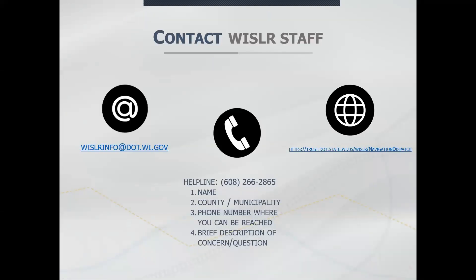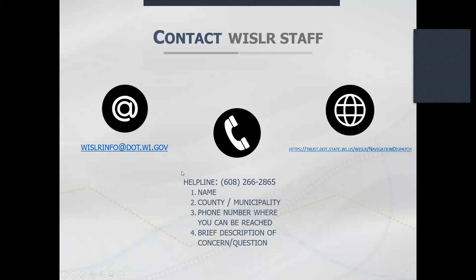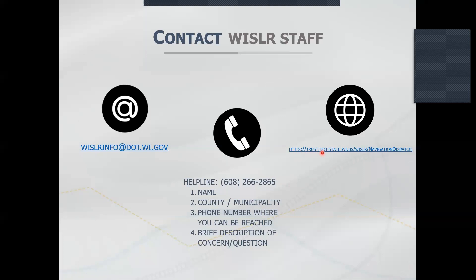That concludes the slideshow presentation of Rating Your Roads. Here is our contact information. You can reach us at whistlerinfo@dot.wi.gov for any questions to Wisconsin DOT. Our phone number is 608-266-2865 — you'll be asked to leave your name, county, municipality, and a brief description of your question, and the right person will get back to you. You can also contact us through the Whistler website. We will now do a brief demonstration of the rating system in action.